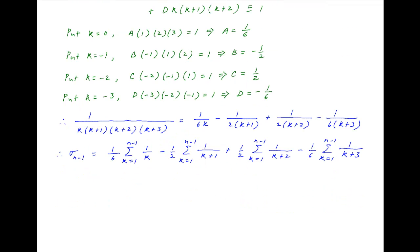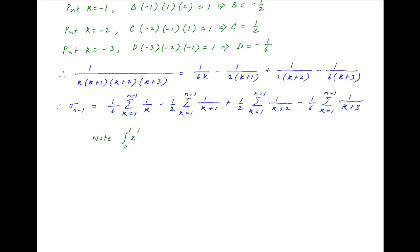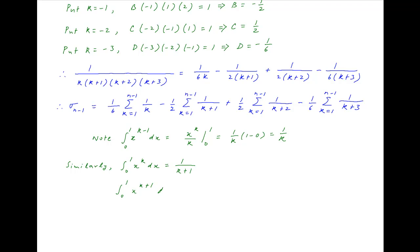Note that the integral of x^(k−1) dx from 0 to 1 equals x^k/k evaluated from 0 to 1, which gives 1/k. Similarly, the integral from 0 to 1 of x^k dx = 1/(k+1), the integral of x^(k+1) dx = 1/(k+2), and the integral of x^(k+2) dx = 1/(k+3). Substituting these results for 1/k, 1/(k+1), 1/(k+2), and 1/(k+3) in the expression for σ(n−1):